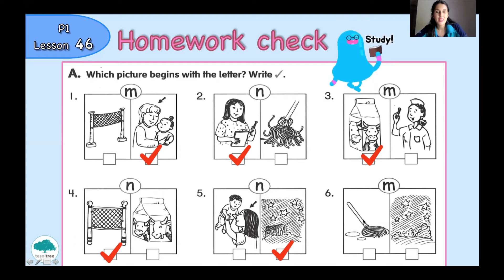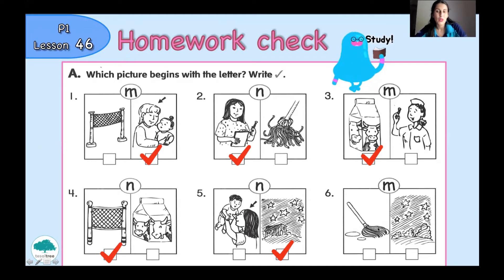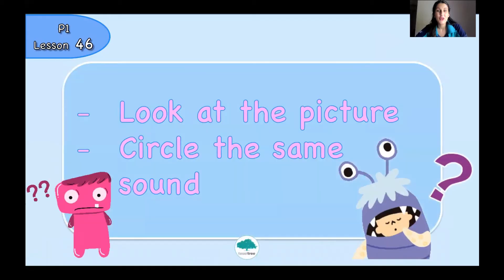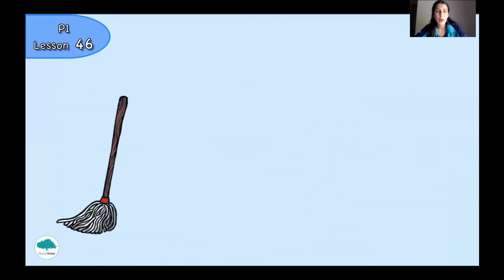You can see mop and night. Which one do you want to choose? We have to choose the picture that begins with the letter M. You have to look at the picture and circle the same sound. So let's try — you can see mop.